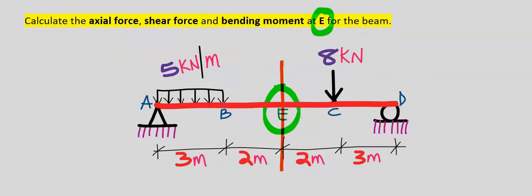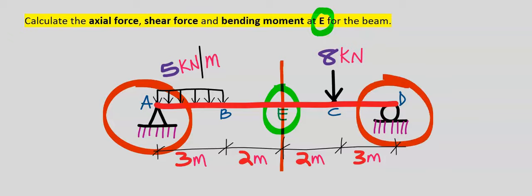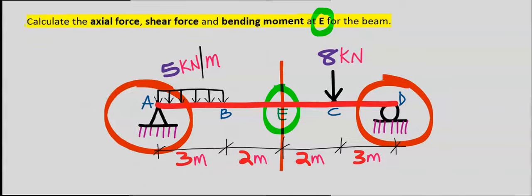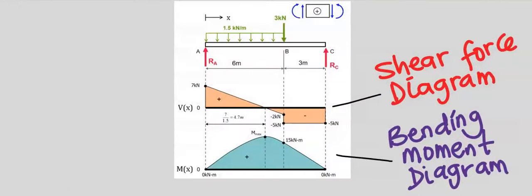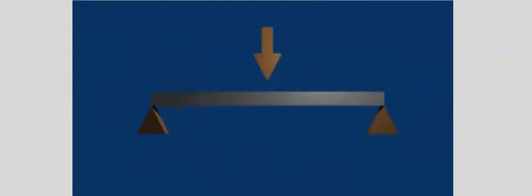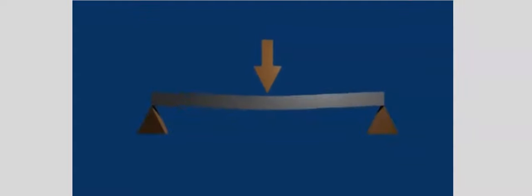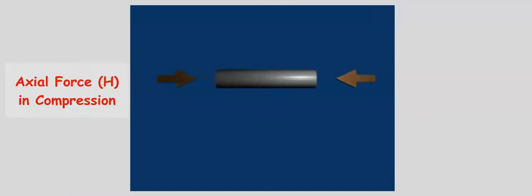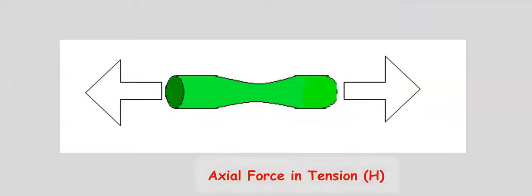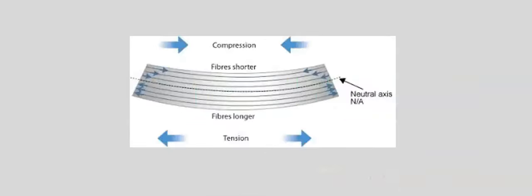We are going to draw the free body diagram and find the reaction forces for the pin support and for the roller support. It is important to mention that this is not the same thing as drawing the shear force diagram or the bending moment diagram, which we are going to see in a separate video. Shear force and bending moment continuously vary along the length of a beam. The axial force can be compression or tension with respect to the neutral axis.